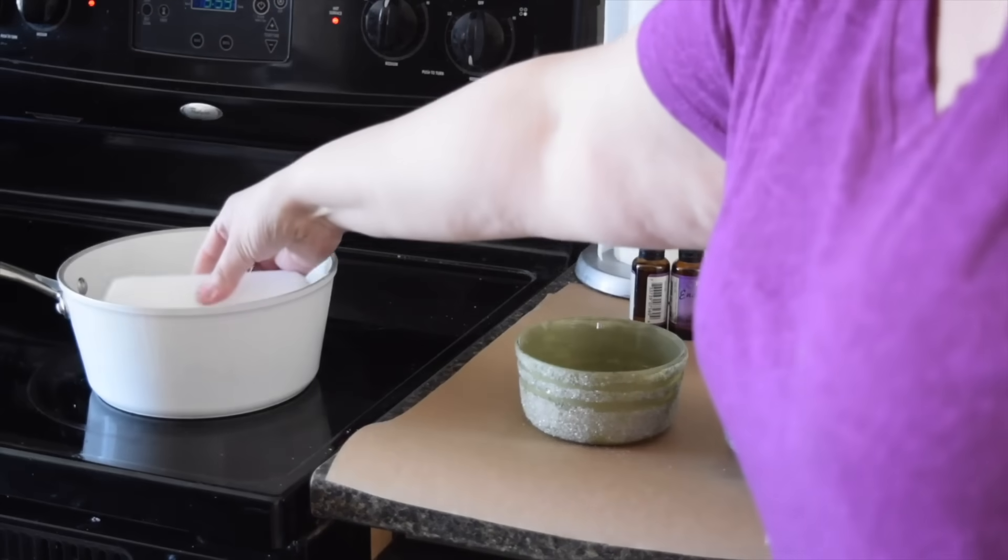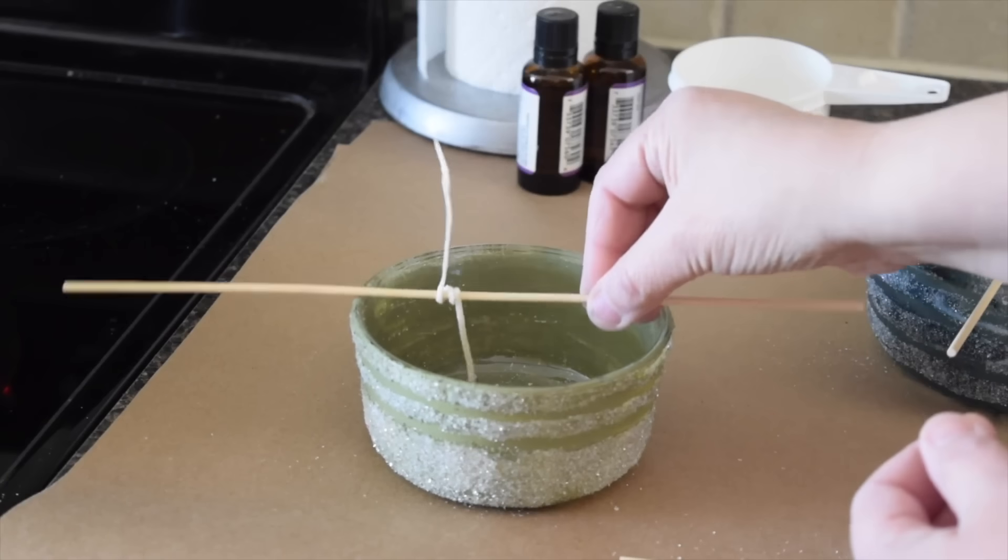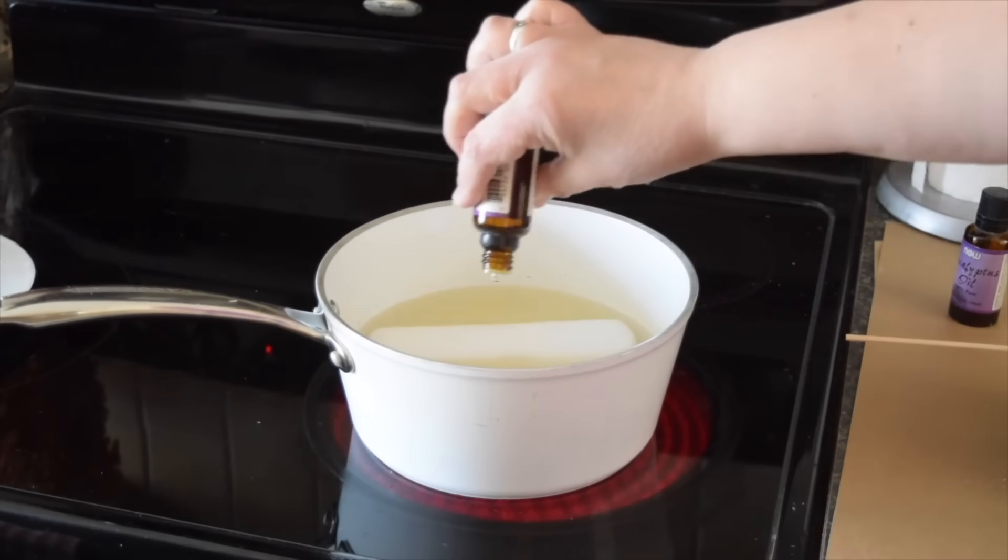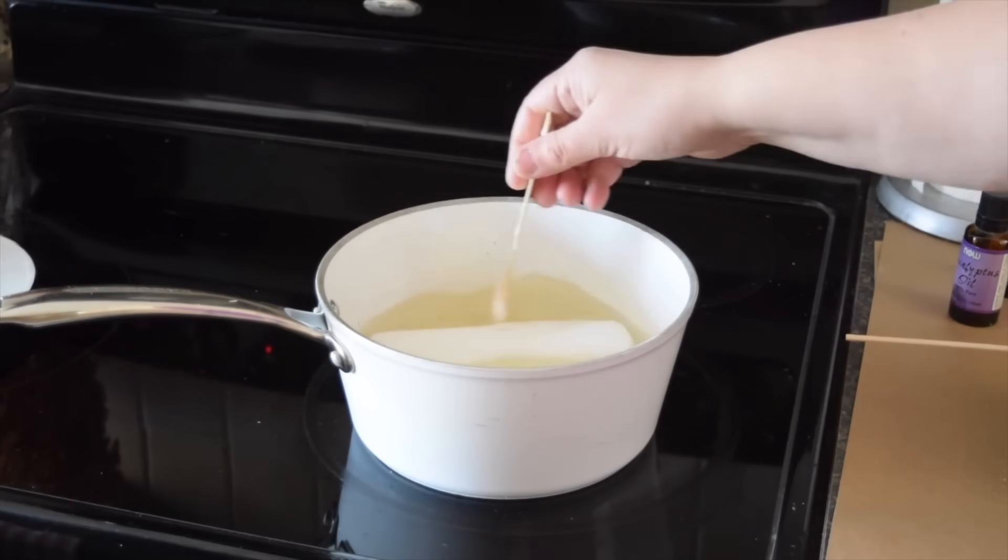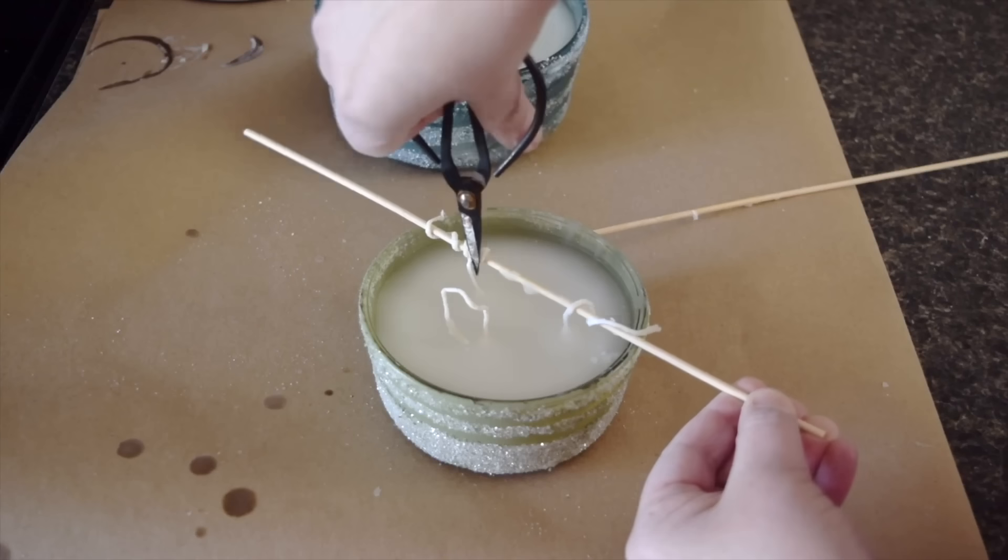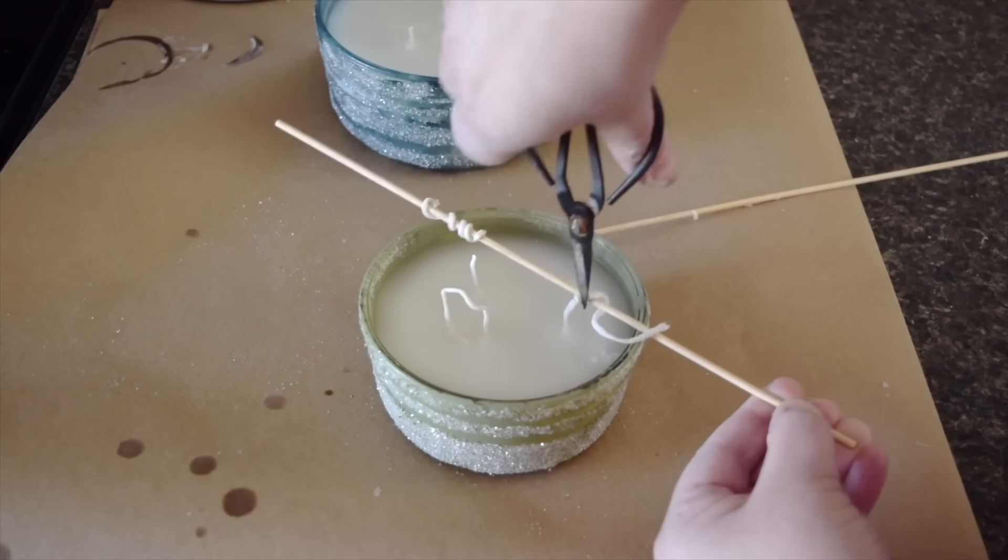I grabbed these pillar candles from the dollar store and I'm going to melt them down. I'm just going to use a couple of skewers to hold the wicks in place. I want to add some essential oil to give my candles a beautiful scent. It's time to fill the glass dishes. The final thing to do is to remove the skewers and then trim the wicks.